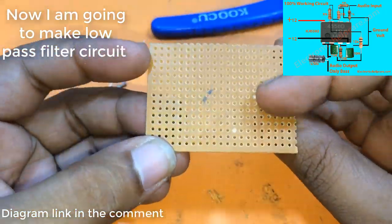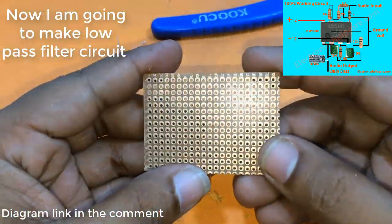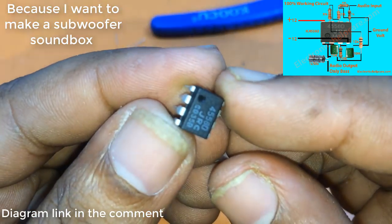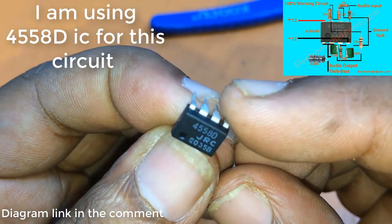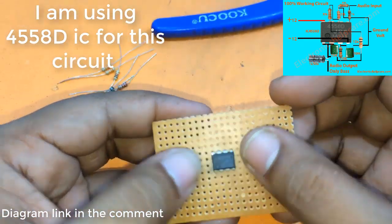Now I am going to make a low pass filter circuit because I want to make a subwoofer sound box. I am using 4558 DIC for this circuit.